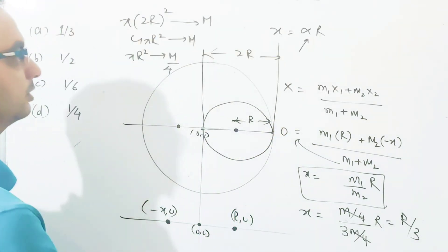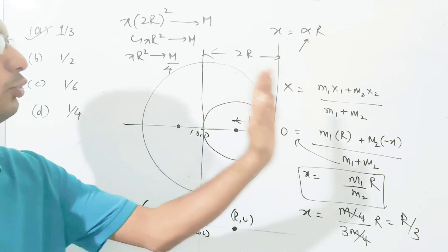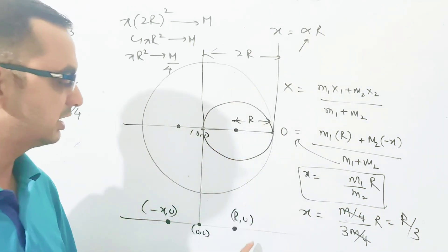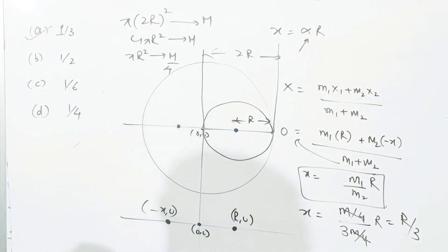So alpha's value is 1 by 3. That is how you solve such questions. The bodies that remain and the part that is scooped out - assume them as points at their positions and simply use this formula to solve the question very easily.